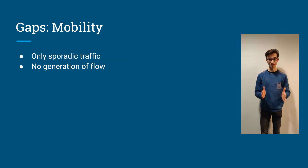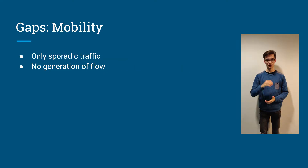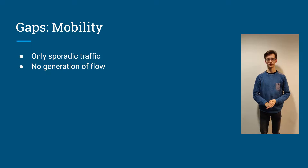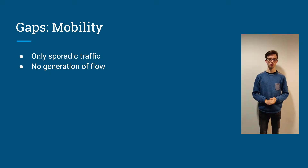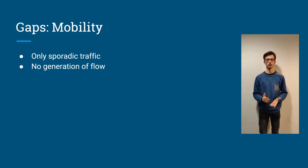The second gap we are going to talk about is the gap of mobility. In an LPWAN network, only sporadic traffic is supported.